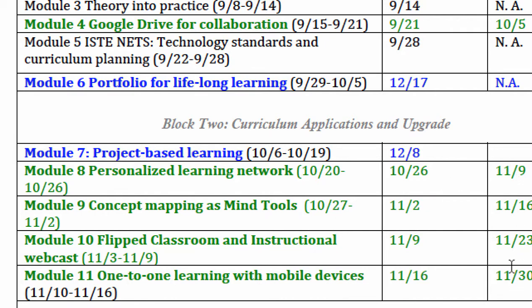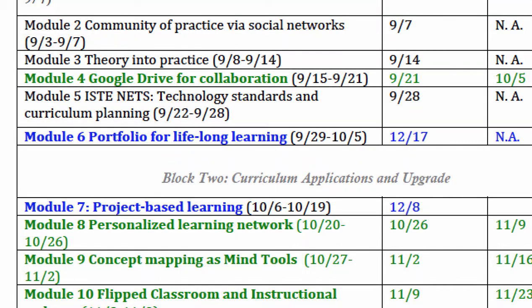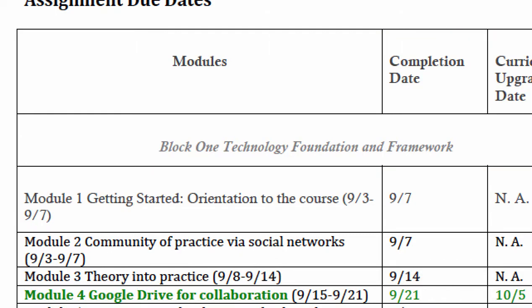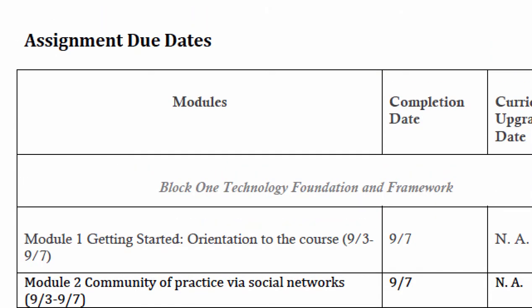You choose three out of the five modules that have curriculum upgrade assignments — you don't need to do all of them. This helps you pace yourself. Notice that major projects have later deadlines in December, while curriculum upgrades are placed throughout the whole semester. Hopefully this document will help you with planning your assignments. Let me know if you have any questions.